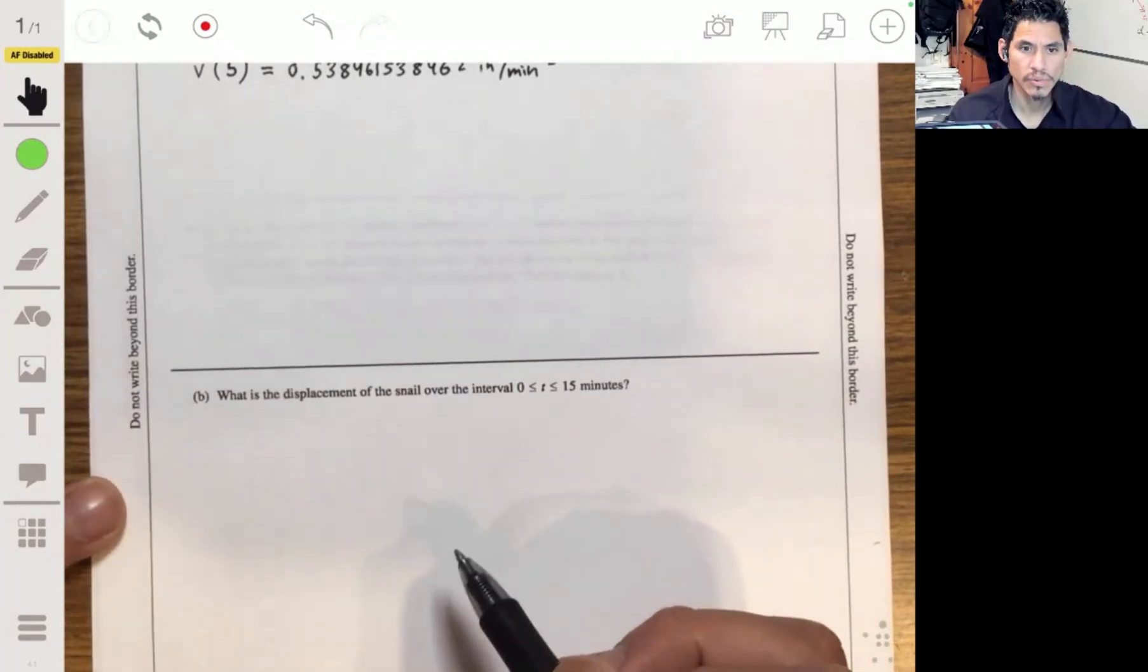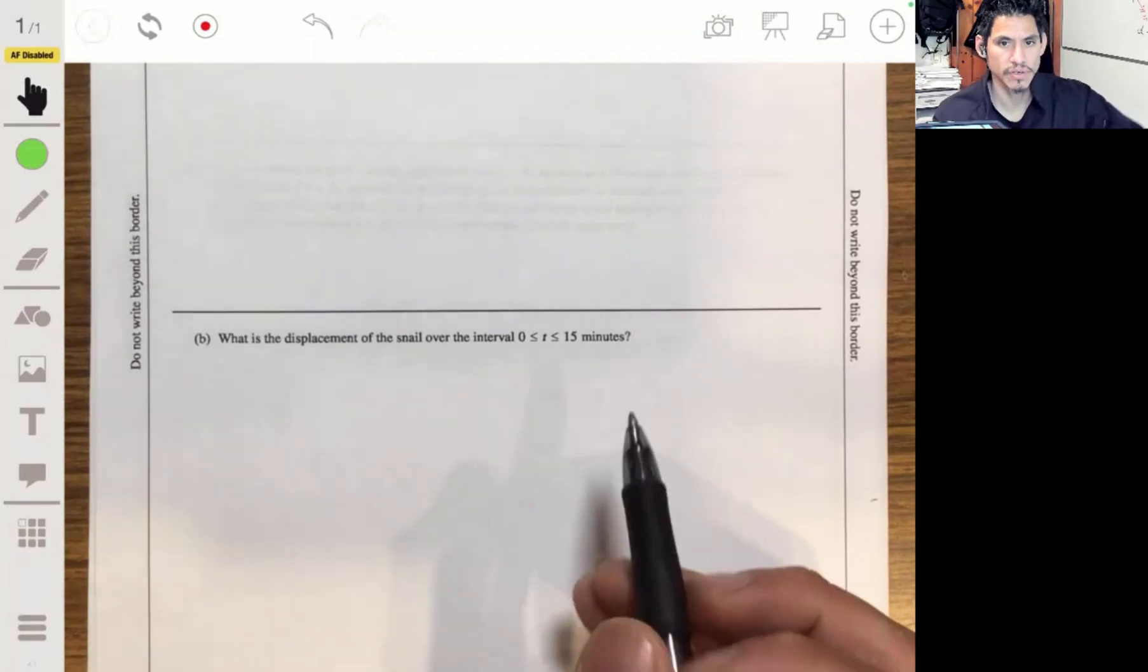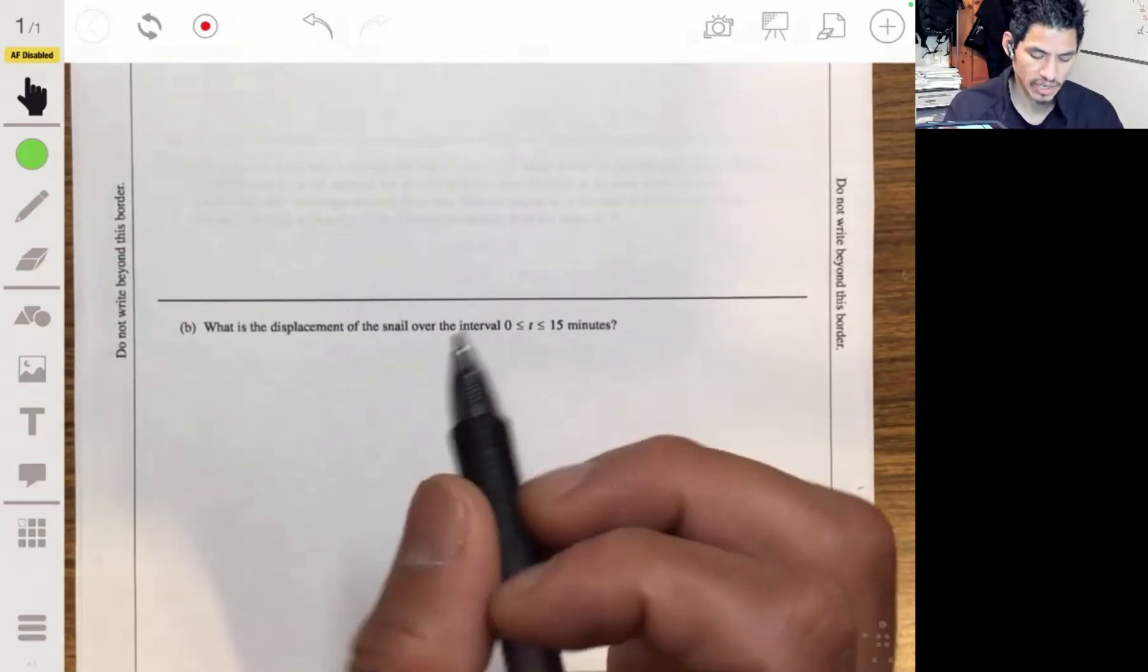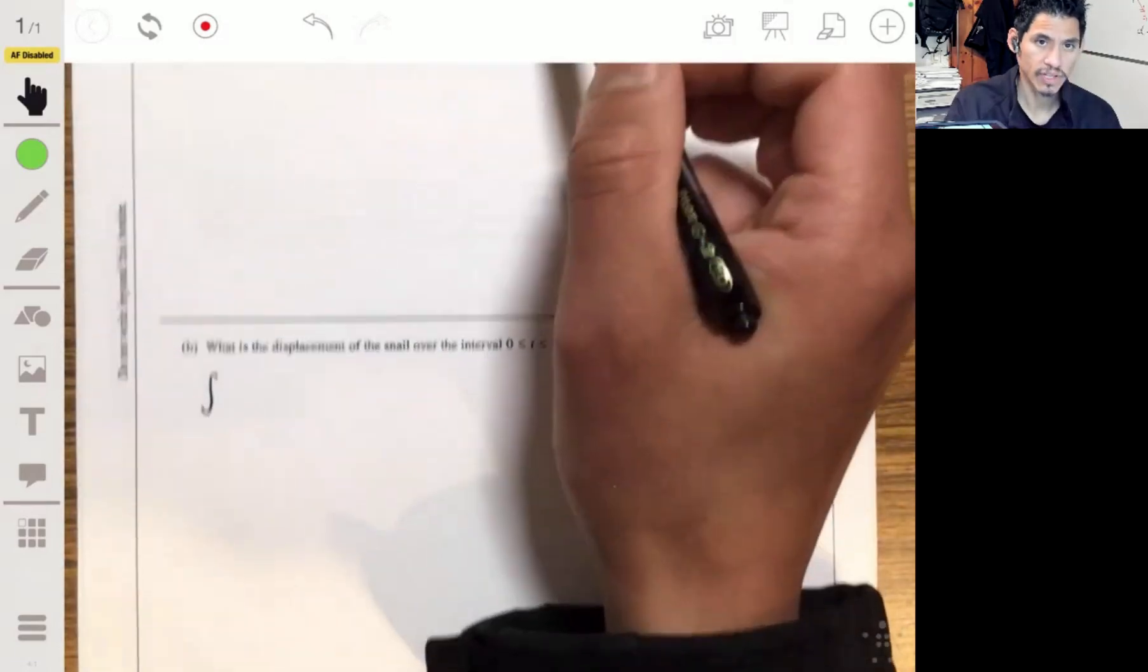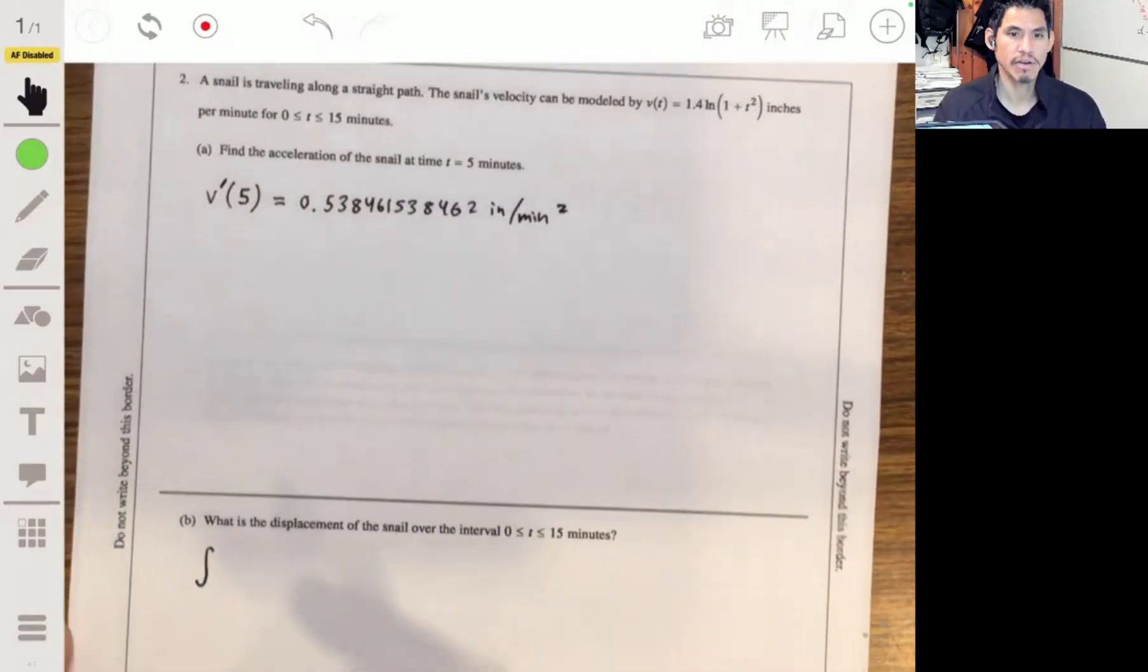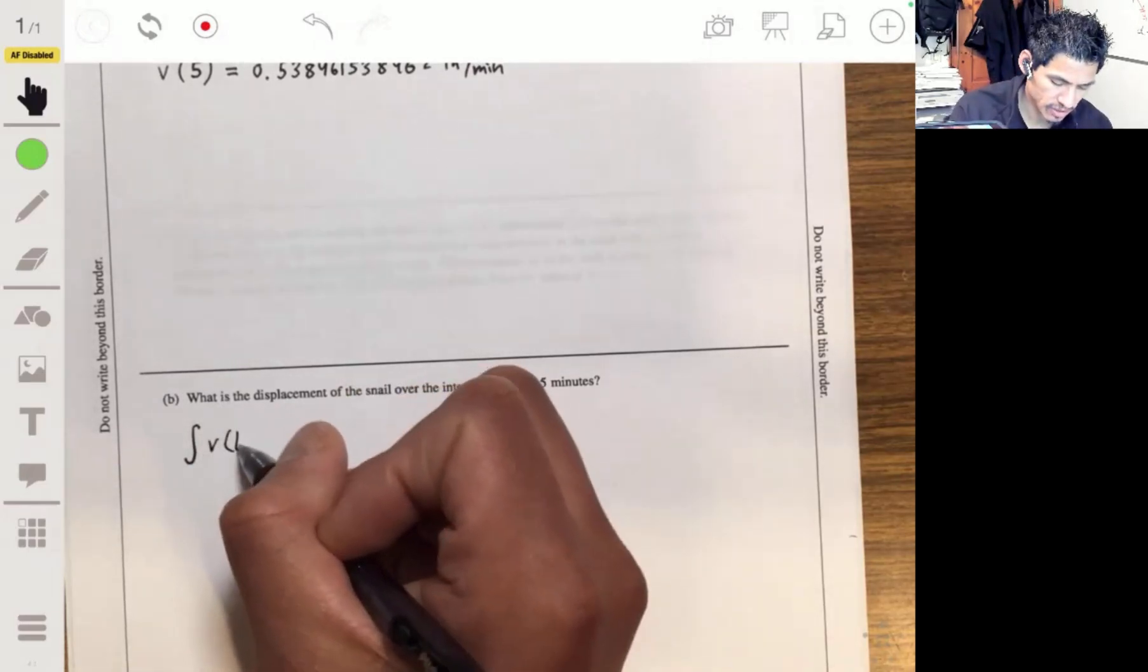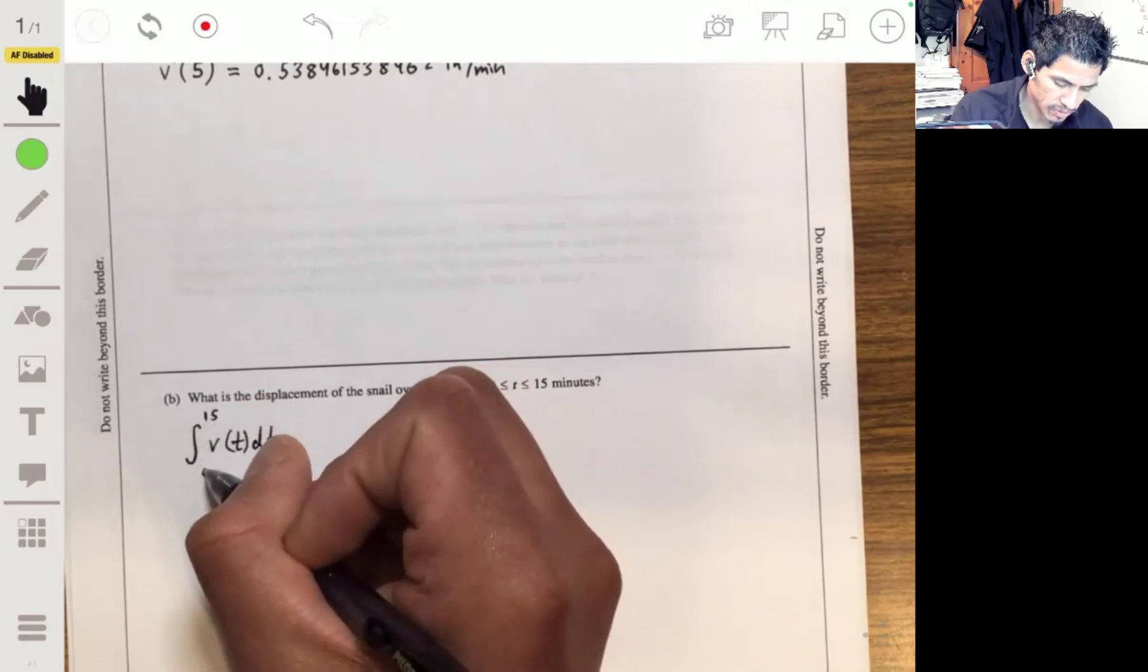All right, part B. What's the displacement of the snail over the interval from 0 to 15 minutes? Displacement can be found by integrating the velocity, because when you integrate velocity you're going to get a position. And remember, displacement is essentially the change in position. So if we integrate the velocity function from 0 to 15, that'll give us the displacement.